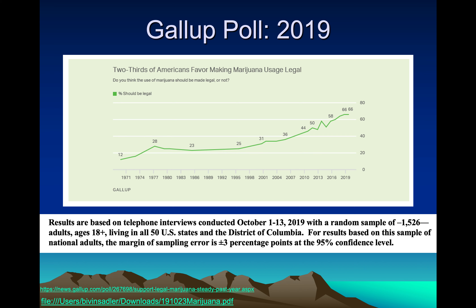We're 95% confident that the true proportion of Americans favoring legal use of marijuana is between 54% and 62%. Fast forward to 2019 — they're still asking that question. Since 2015 it kept going up until we're now at 66%. Their margin of error was now 3%, which would imply a bigger sample size — and this one was 1,526. All things that make sense now that we know about margin of error and confidence intervals for proportions.